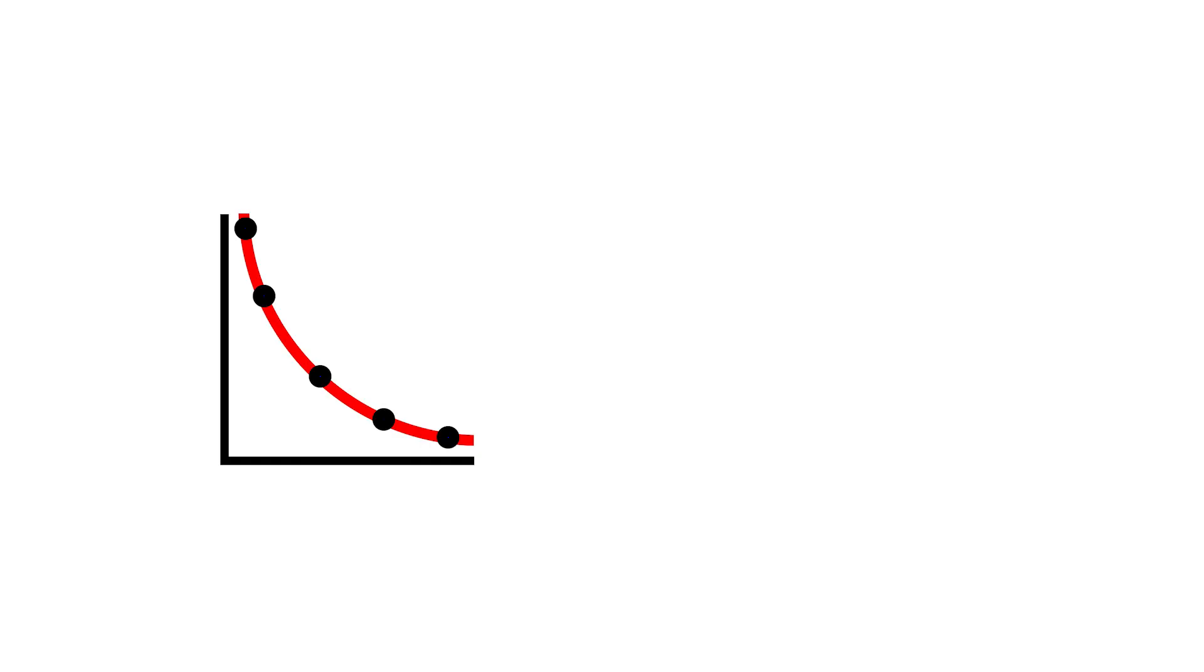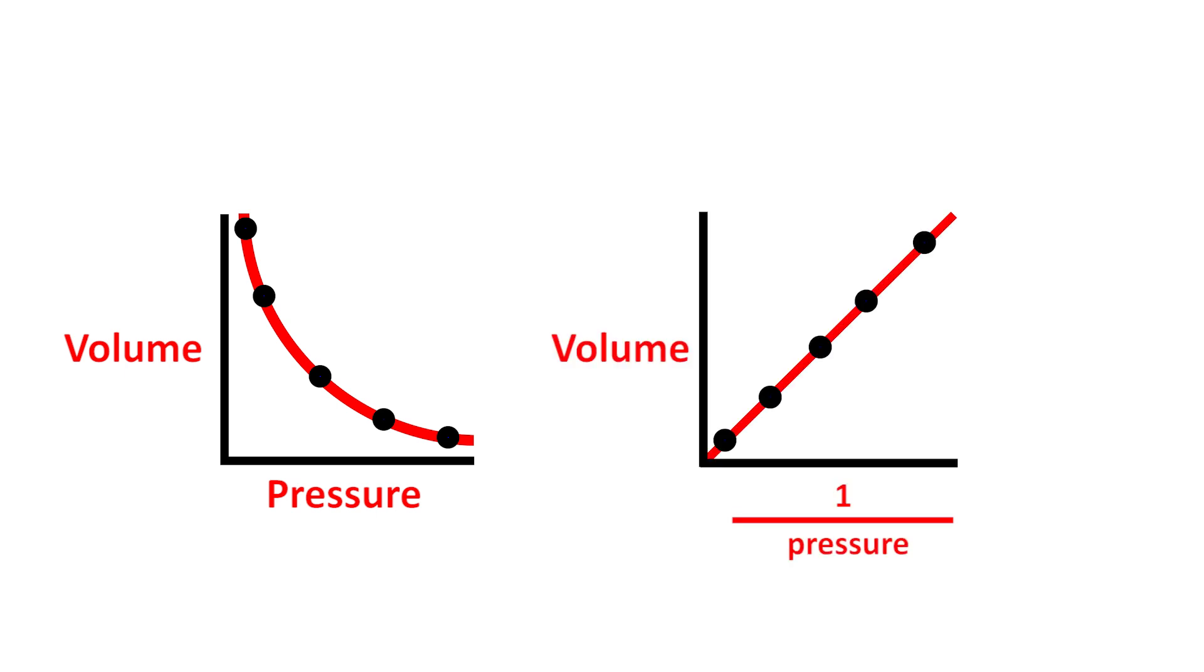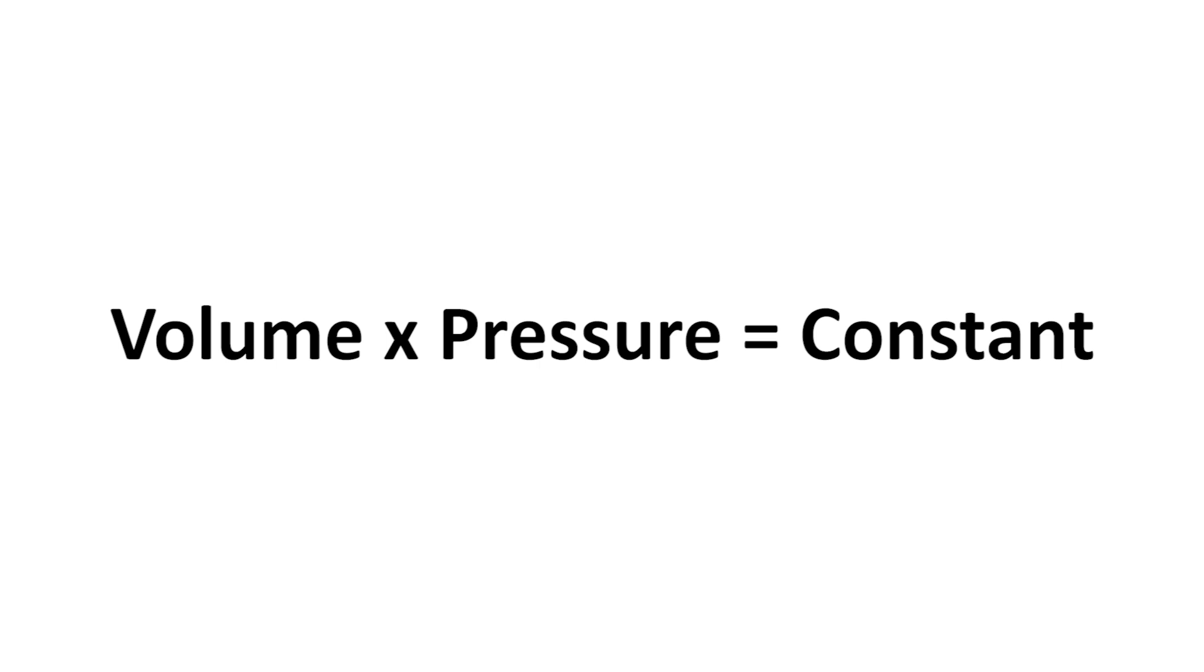From the results and drawing the graph of volume against pressure, we get a curved graph. This shows us the volume is inversely proportional to pressure. When drawing the graph of volume against one over pressure, we have a straight line, again confirming that the two are inversely proportional to each other. Please note that the volume times pressure will give you a constant.